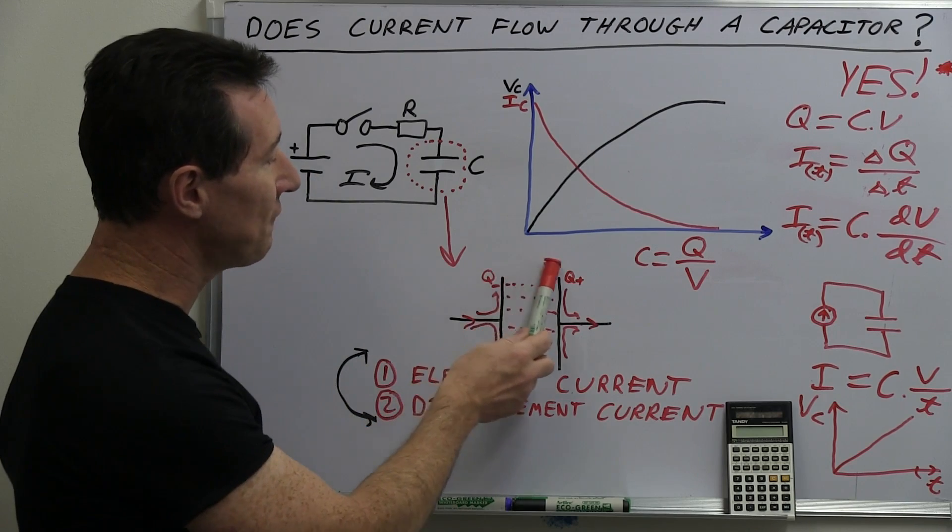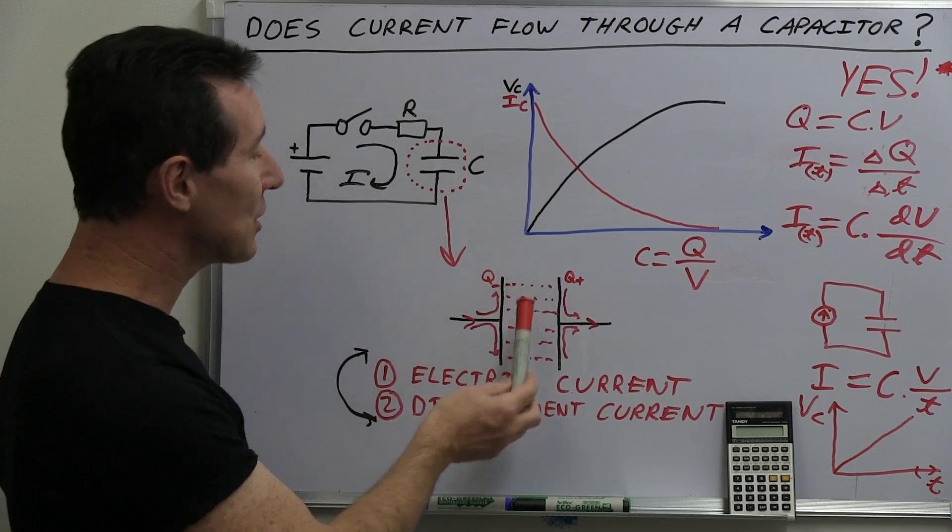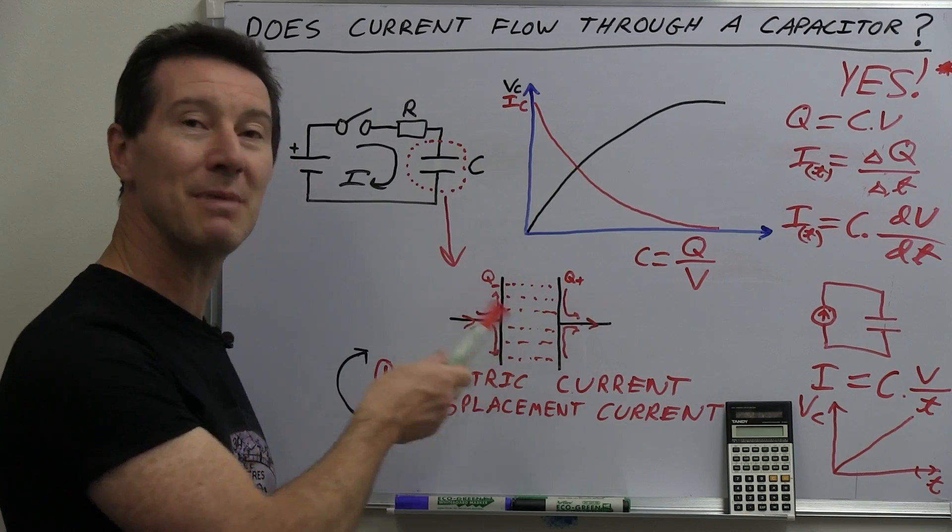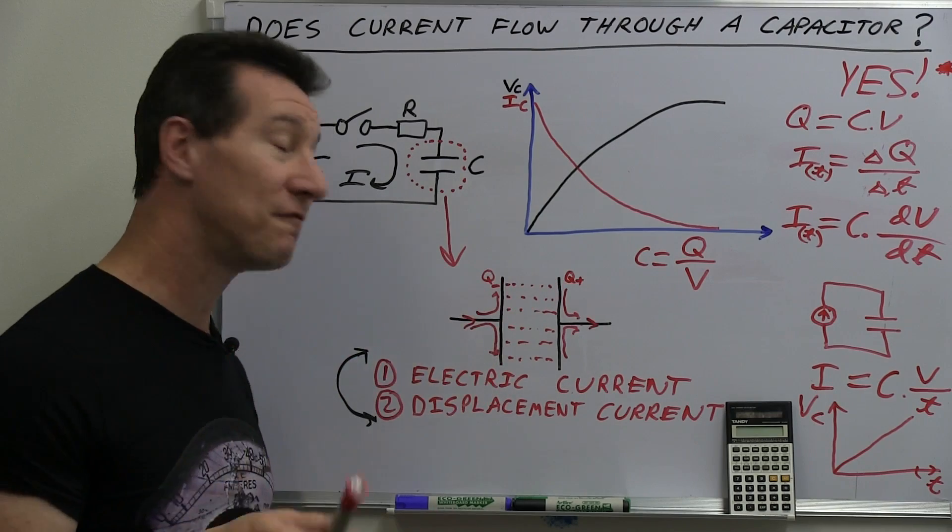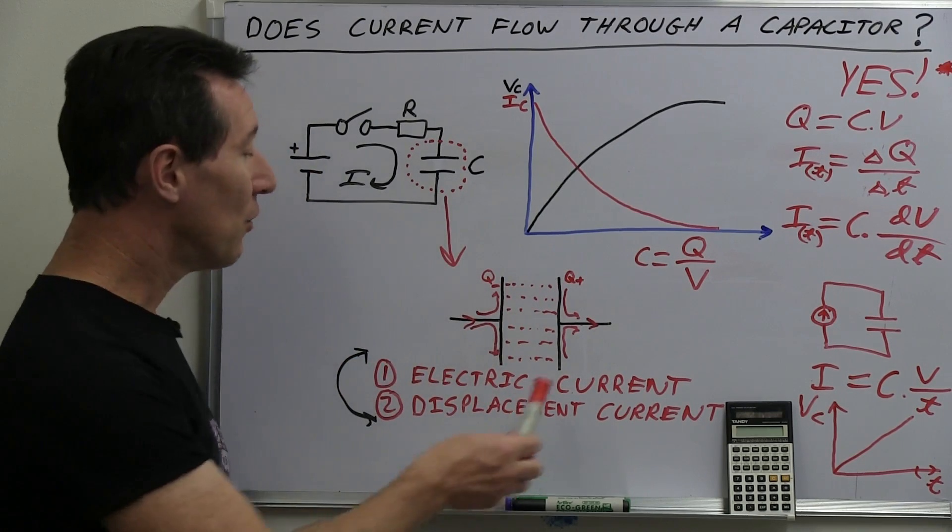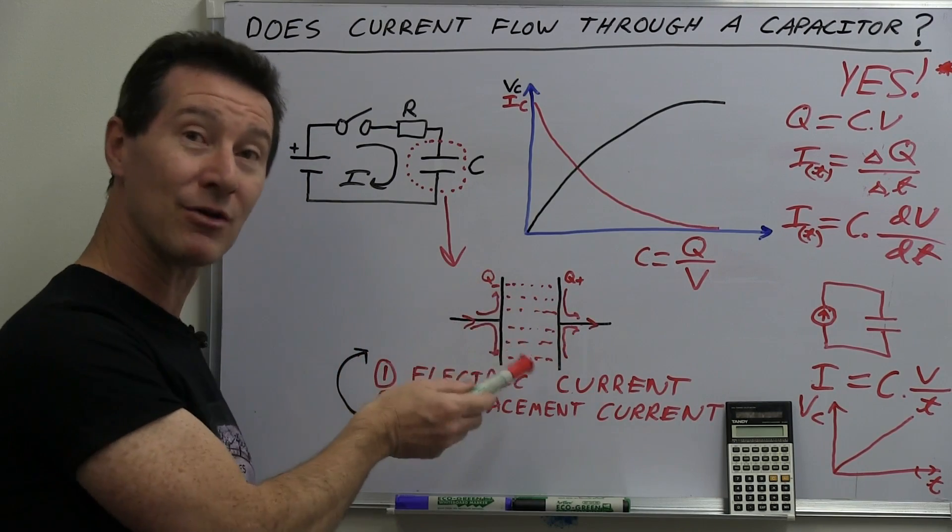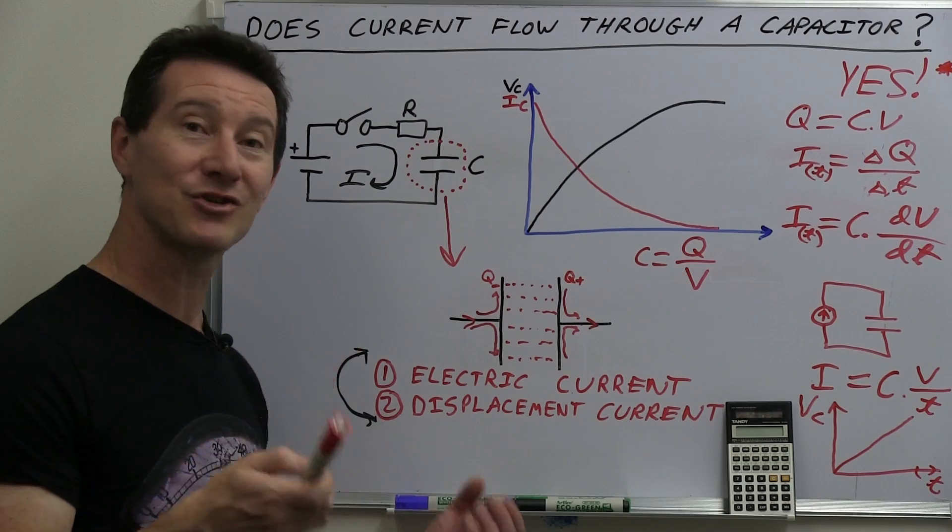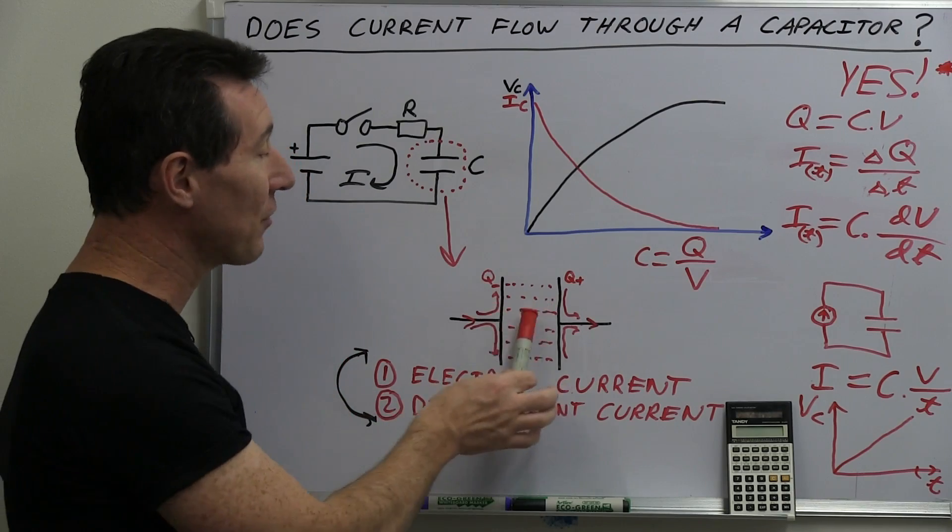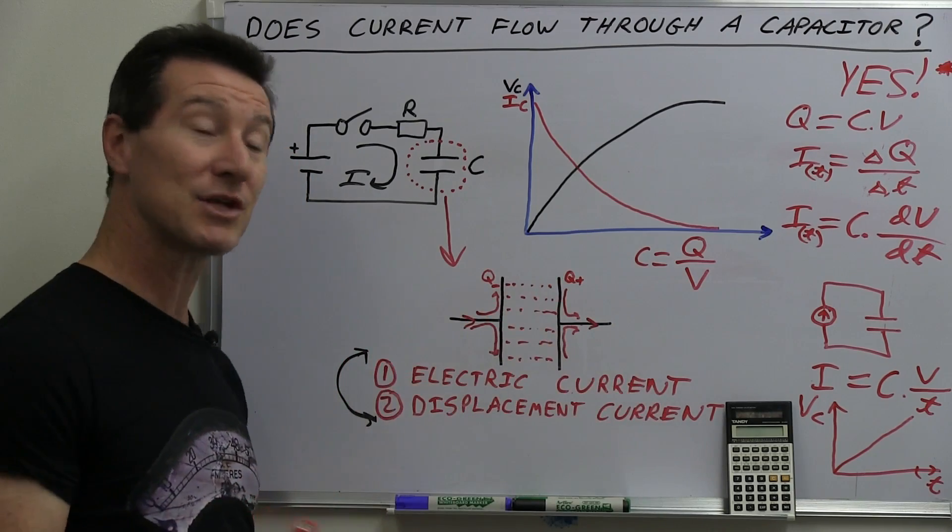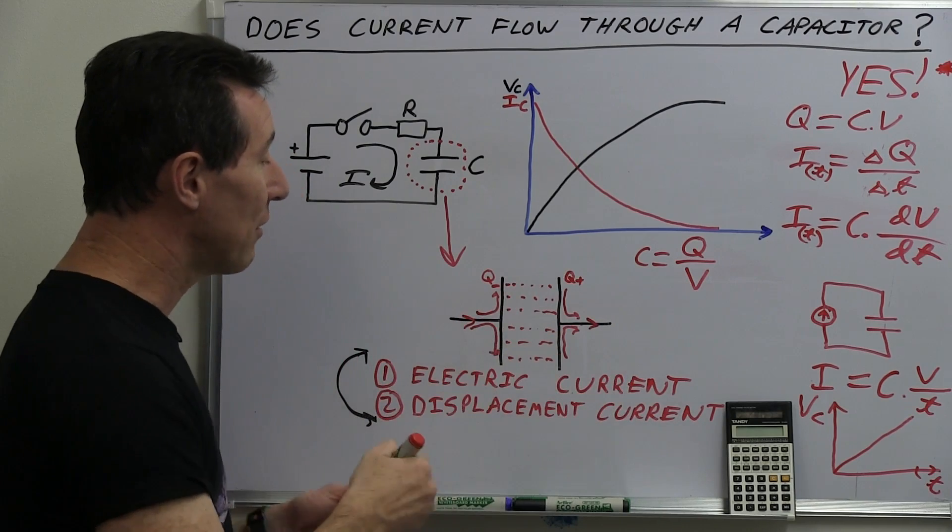It's the changing electric field between the plates actually also creates a changing magnetic field. And it's that magnetic field concept which causes the displacement current. It gives the equivalent current concept in terms of electromagnetics flowing through the dielectric material. So current is still flowing through.